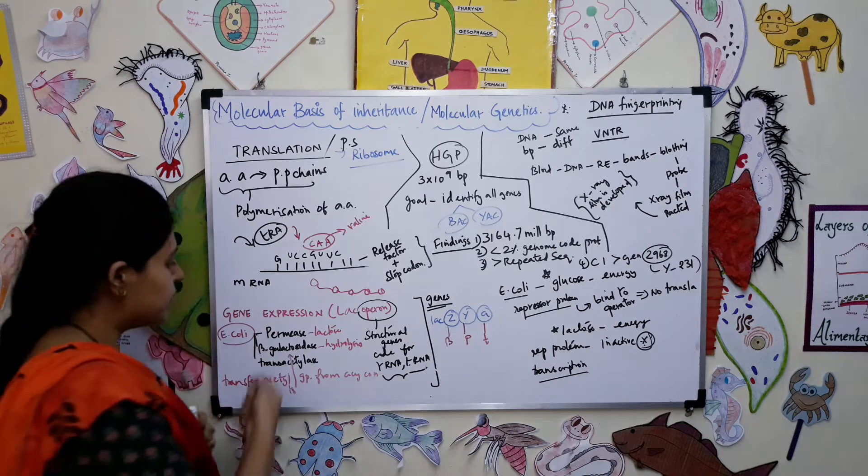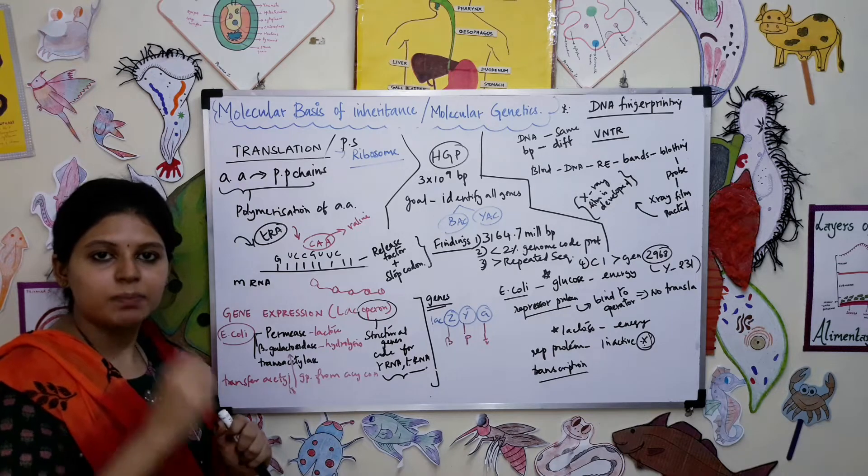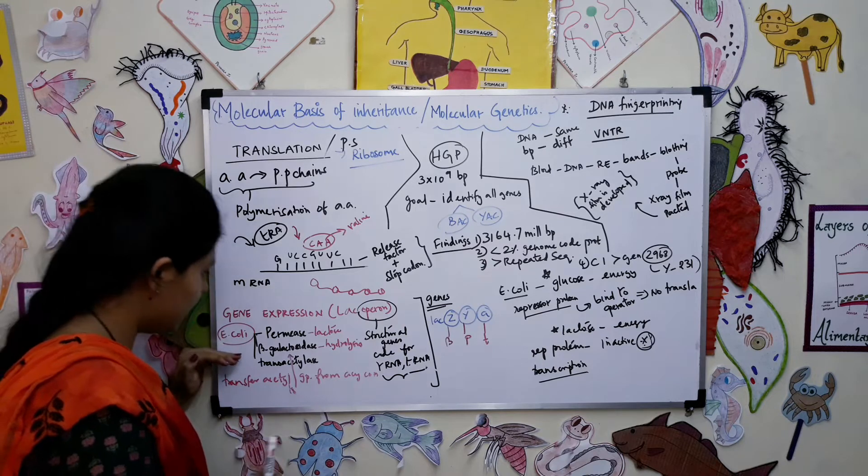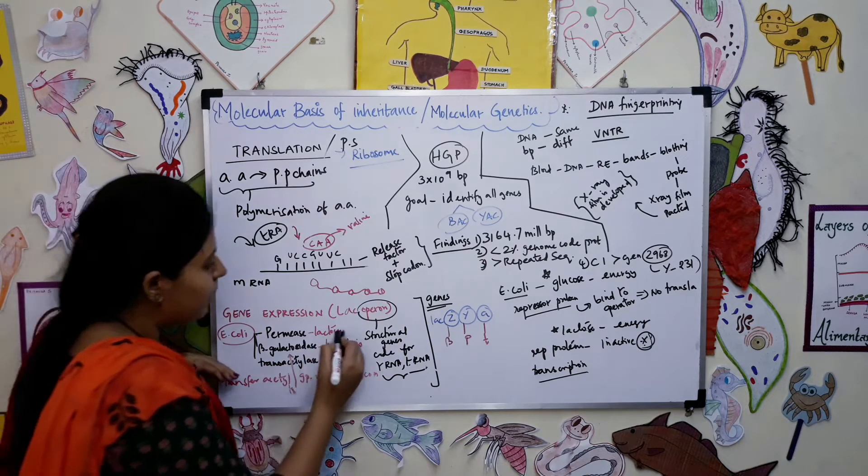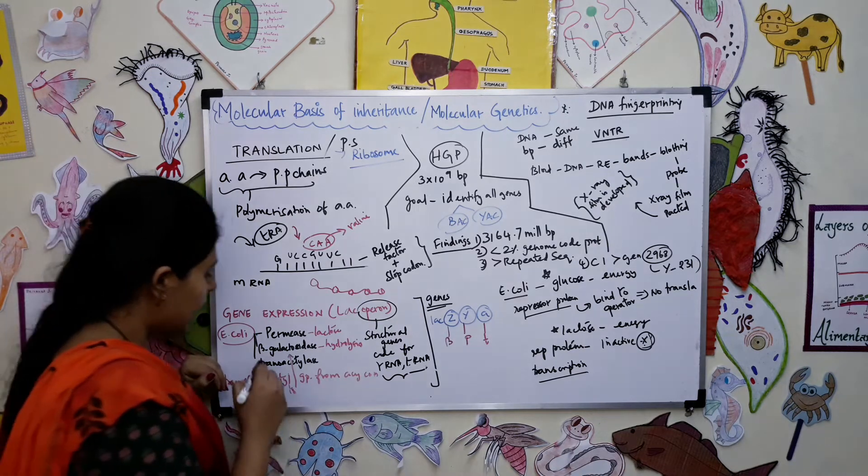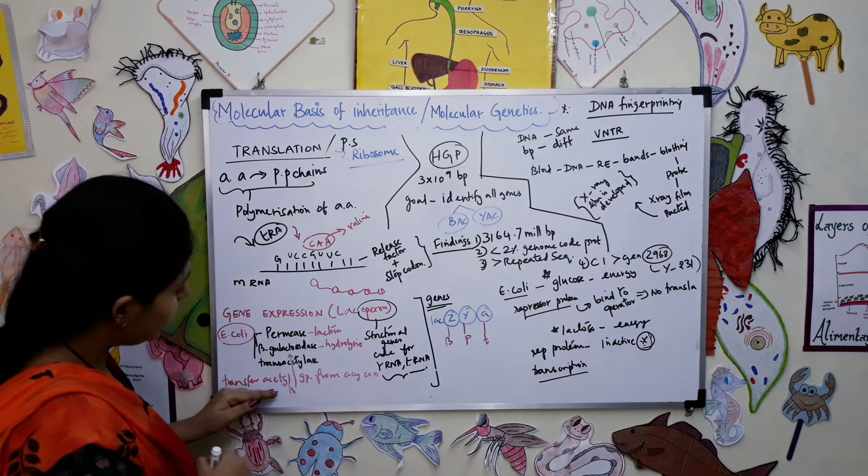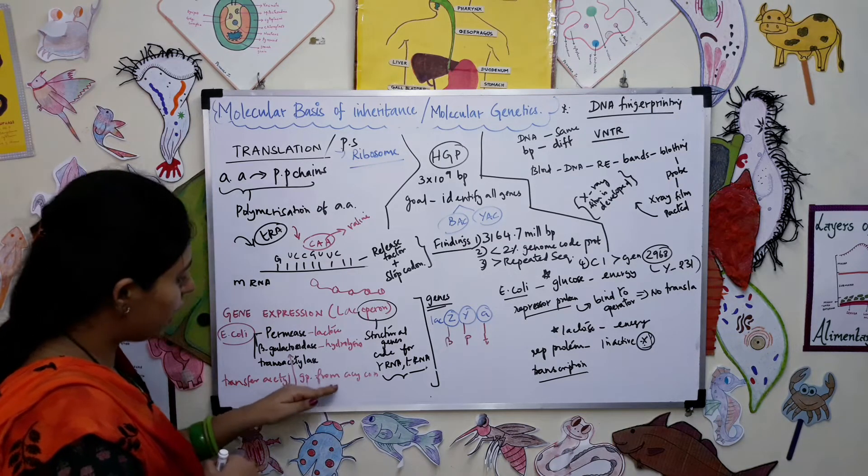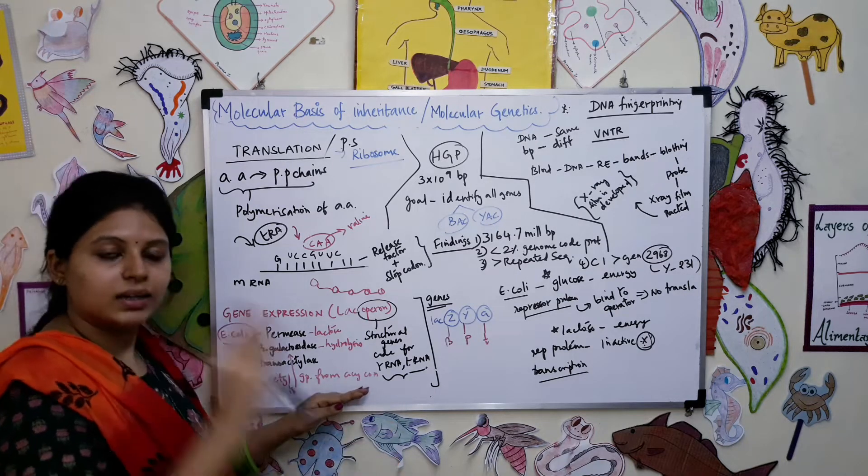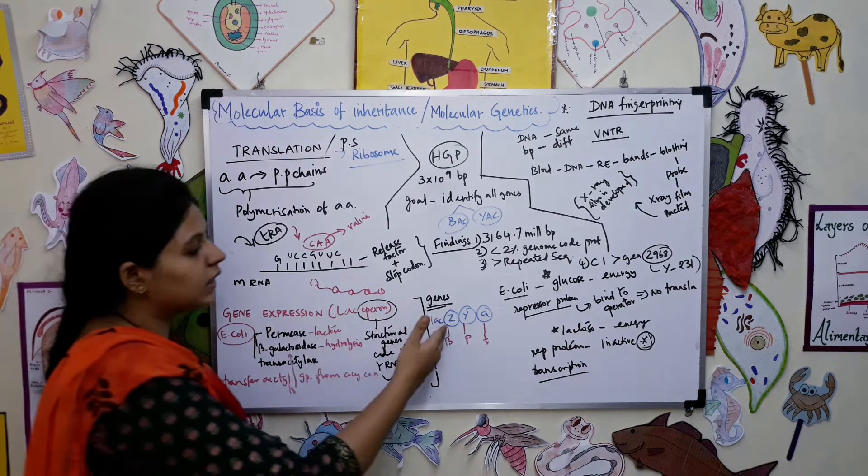All these are enzymes. What is the work of each of these enzymes? Permease enzyme helps in the production of lactose. Beta-galactosidase helps in breaking down lactose which is hydrolysis of lactose. Transacetylase enzyme transfers the acetyl group from the acetyl-CoA to the beta-galactosidase.